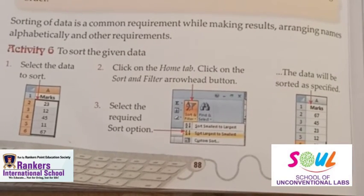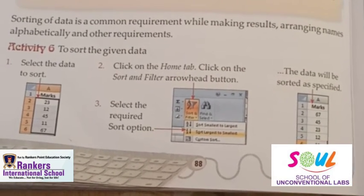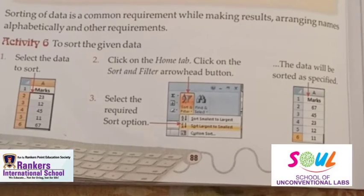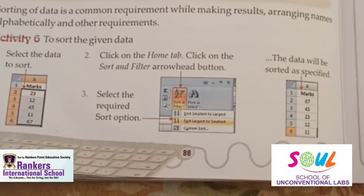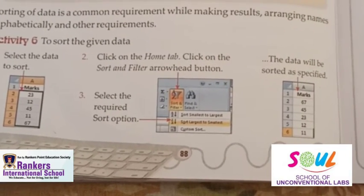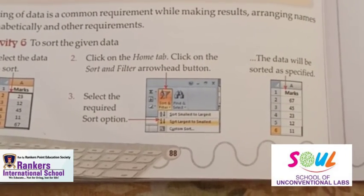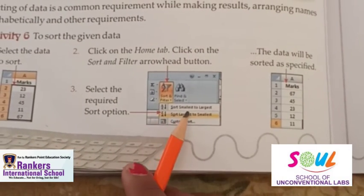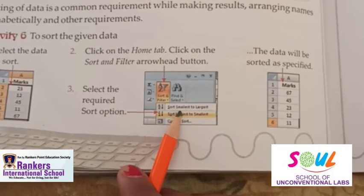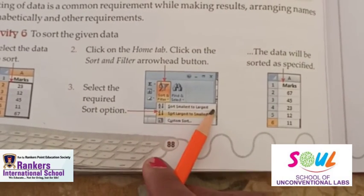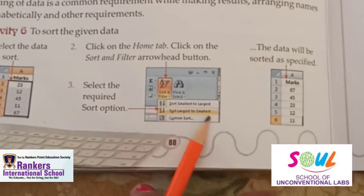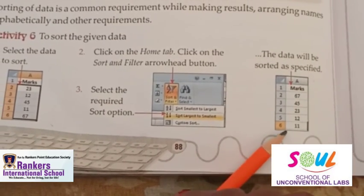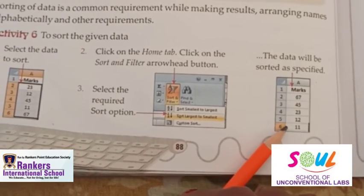To sort data: first select the data you want to sort, then click on the Home tab button, select the required sort option, and the data will be sorted in the specified order.